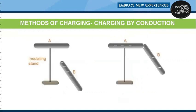Charging by conduction: the process of charging an uncharged object by bringing it in contact with another charged object is called charging by conduction. Consider an uncharged metal rod A kept on an insulating stand and a negatively charged conductor B. If we touch the uncharged conductor A with the negatively charged conductor B, transfer of electrons from the charged conductor to the uncharged conductor takes place. Hence the uncharged conductor gains extra electrons and the charged conductor loses electrons. Thus uncharged conductor A becomes negatively charged, whereas the negatively charged conductor B, which loses electrons, becomes positively charged.